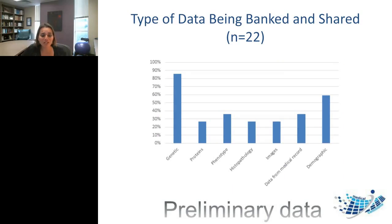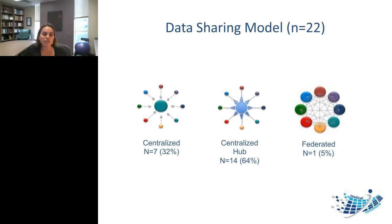We're really excited about this project. Some very preliminary data based on the first 22 initiatives on which we've done extensive data collection shows the kinds of data being banked — it's not just genetic or sequence data anymore, but also proteins, phenotypes, images, demographics, and other kinds of information. Of the 22 initiatives initially reviewed, about 32% use a centralized model, 64% use a centralized hub, and about 5% are currently using a federated model. There might be other models out there offering alternative structures that we need to explore as well.